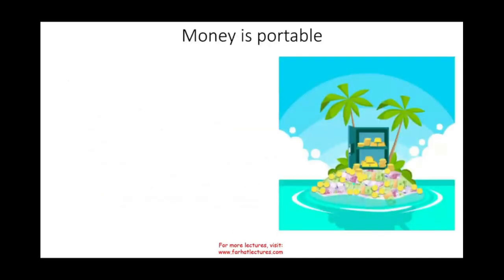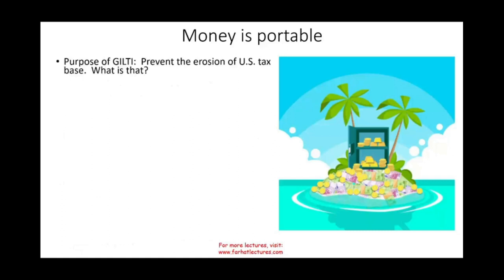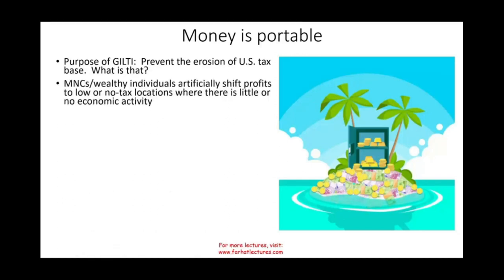So what is GILTI — this taxation of global intangible low tax income — all about? We have to look at it from a historical perspective to understand where it's coming from. The purpose of it is simply to prevent the erosion of the U.S. tax base. U.S. multinational corporations and wealthy individuals can shift their profit to low or no income tax locations where there is little or no economic activity. This sounds very similar to the controlled foreign corporation subpart F income concept.